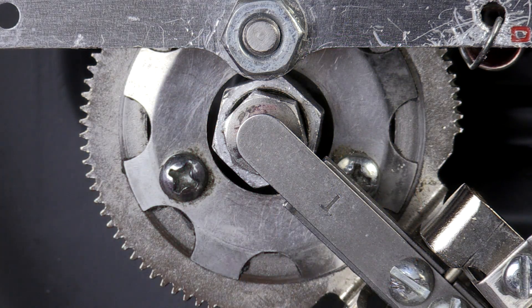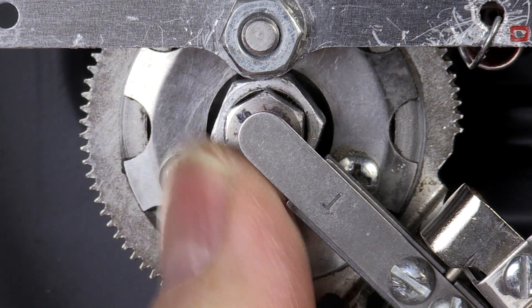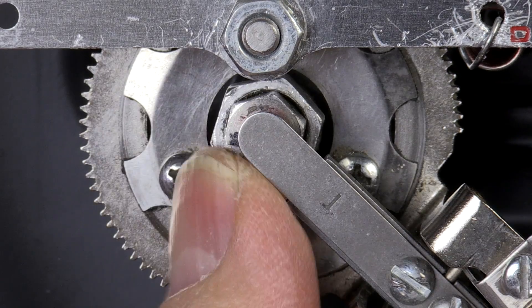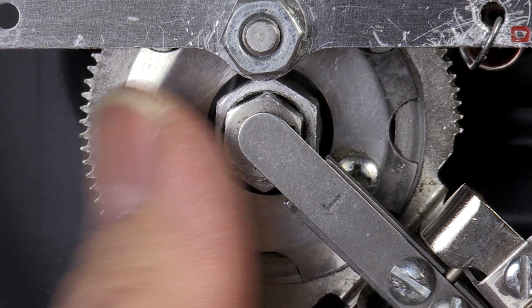Step one is to loosen the lock nut around the nozzle. Turn the nozzle in all the way and then back it out four complete turns.